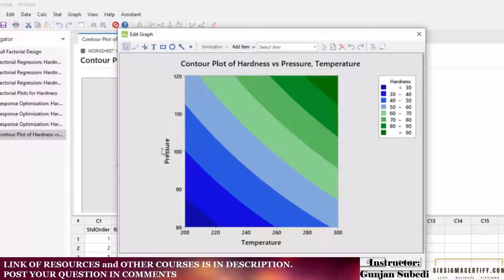Here your response is the hardness. These are the legends for different units of hardness. For example, the deep blue legend is for your hardness of unit less than 30 and these colors represent the associated levels of hardness.